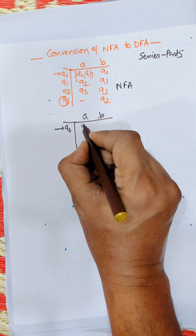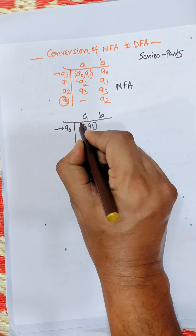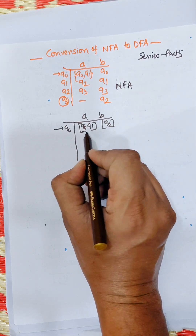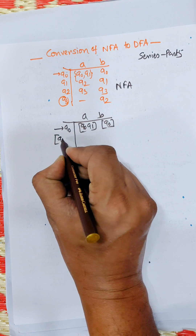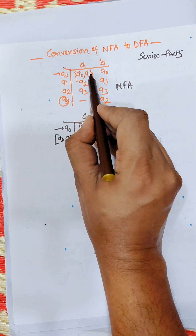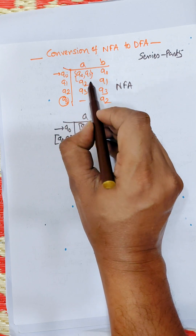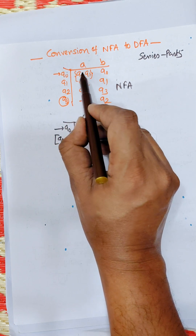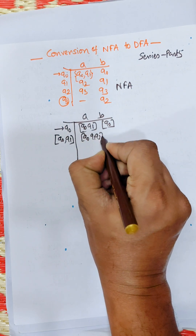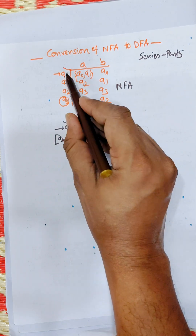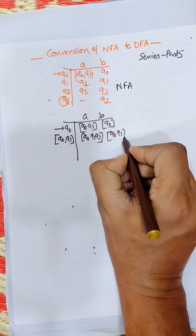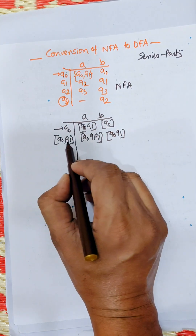For input a and b, we write Q0Q1 and Q0. Q0Q1 is a new state, so write it down as a present state. For Q0Q1 on input a: Q0 gives Q0Q1, and Q1 gives Q2, so the union is Q0Q1Q2. For Q0Q1 on input b: Q0 gives Q0 and Q1 gives Q1, so Q0Q1 is already available as a present state.